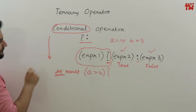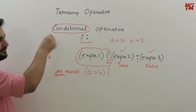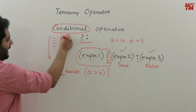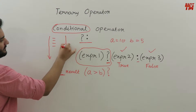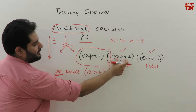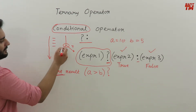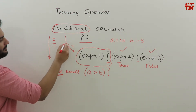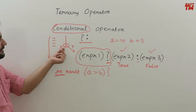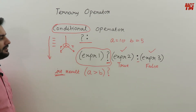Until now we were following a sequential manner in our program: line 1, line 2, line 3, and so on. But now using conditional operators, at some point we have two paths. If this condition is true we move towards expression two; if the condition is false we go the other way. So now we are not going sequentially — we are going conditionally, depending upon the condition.